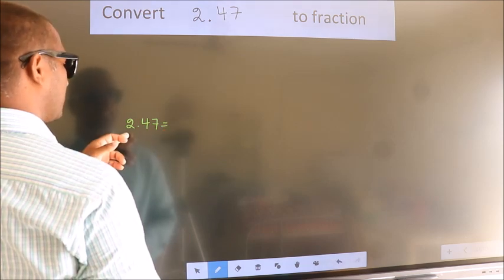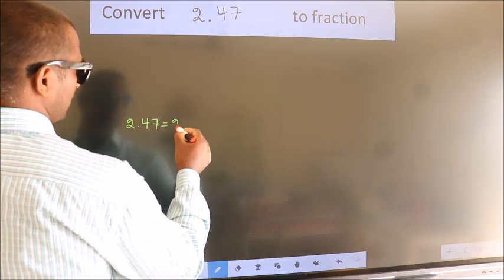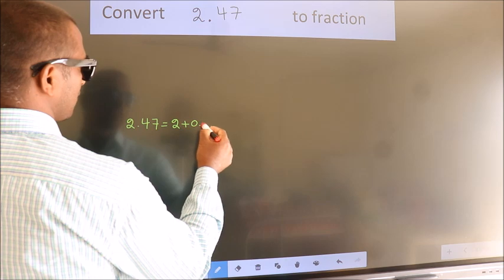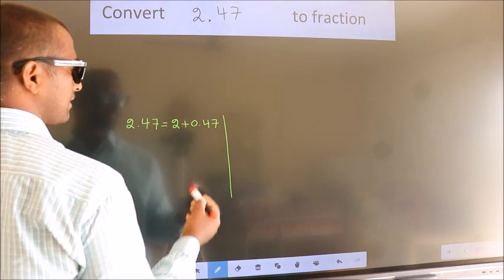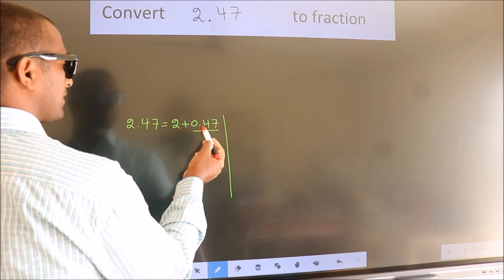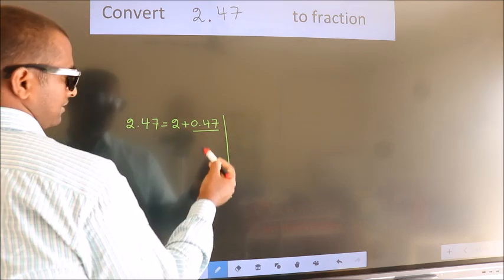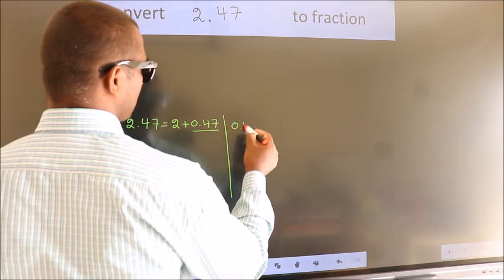First we should break this into 2 plus 0.47. Next convert this to fraction over here. So 0.47.